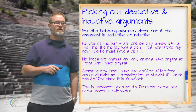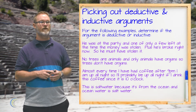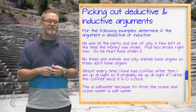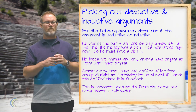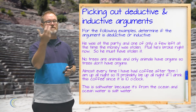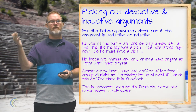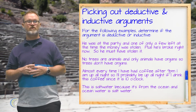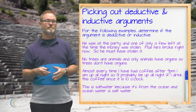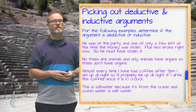Next: almost every time I've had coffee after 9 p.m., I am up all night, so I'll probably be up all night if I drink this coffee since it's 10 o'clock. This is an inductive argument because it's a prediction — forward-looking. You're taking evidence from the past and applying it to tonight. Just because it's happened before doesn't mean it necessarily happens now, so the conclusion only follows with likelihood.